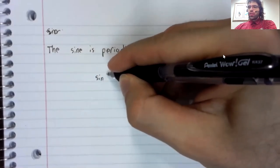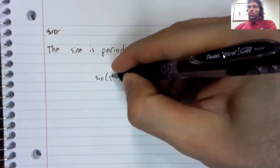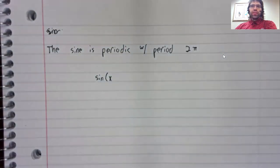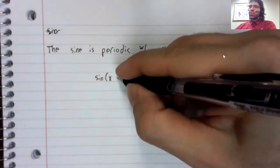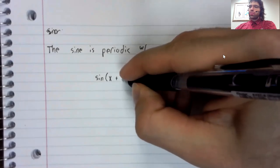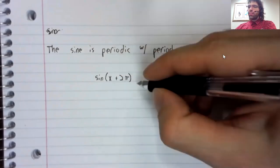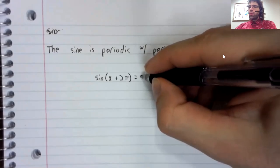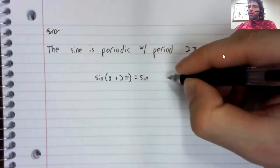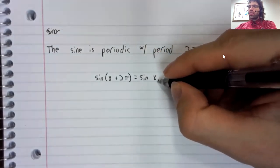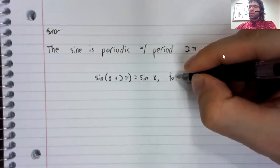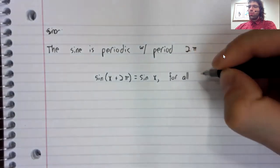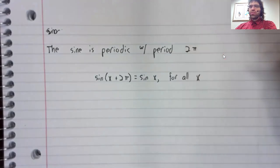Which is just a long-winded way of saying that sine of x plus 2π equals sine of x for all x.